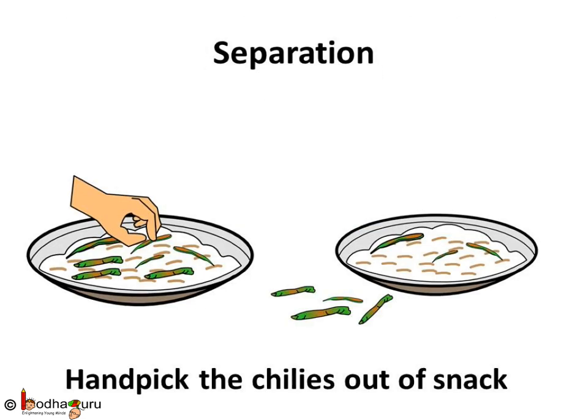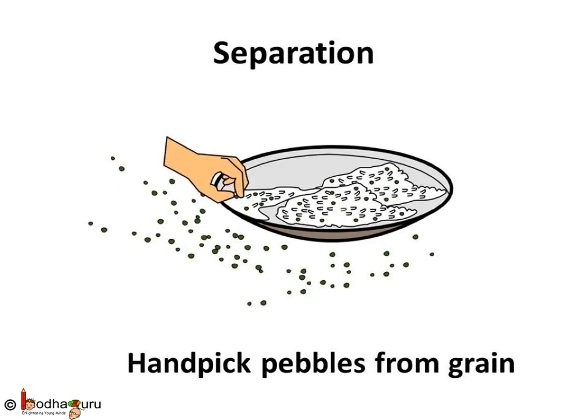Children generally don't like red chilli in their food. So while eating any snack — say poha or upma — they just pick the chillies by hand and put them aside. Similarly, at home too, before cooking rice, your mother removes the unwanted pebbles or any other substance from the rice by hand-picking.